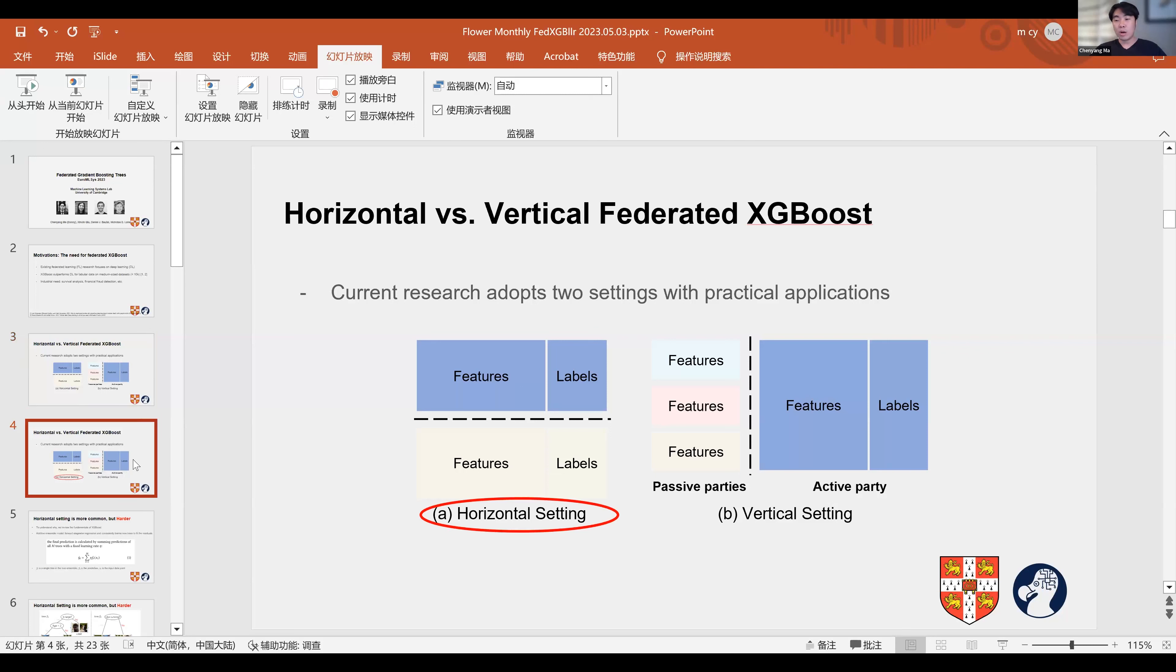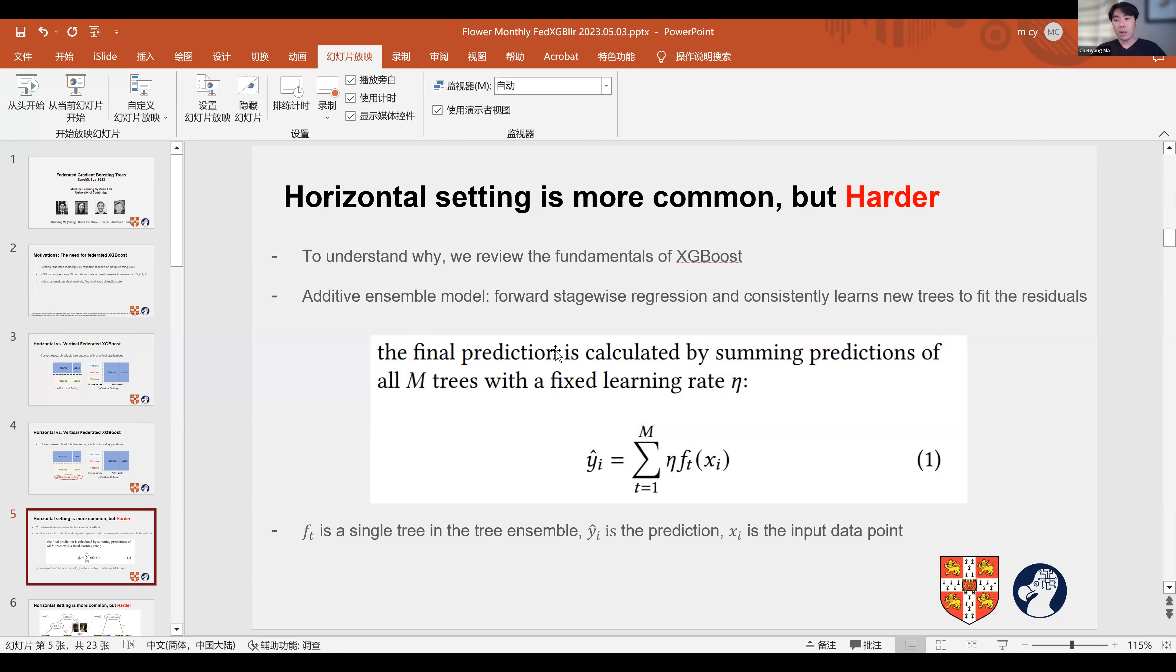Our work focuses on the more common setting, which is the horizontal setting. Although the horizontal setting remains more common, the training of horizontal federated XGBoost actually turns out to be harder.